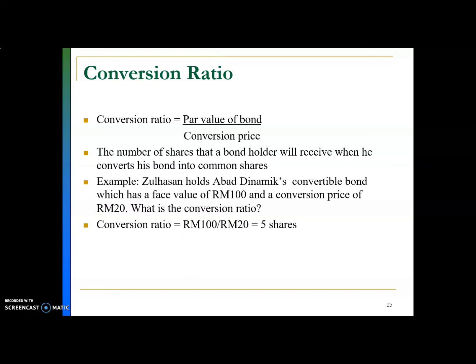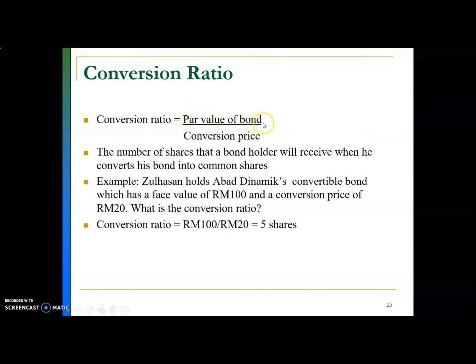How do we value convertible bond? There are some terms you need to know before we learn how to value the bond. First, you need to know what is conversion ratio. Conversion ratio ni adalah number of shares yang you dapat kalau you convert bond tu jadi share. We call it conversion ratio. The formula is par value of bond — ambil par value, bukan bond price — divided by conversion price. The number of shares that the bondholder will receive, we call it as the conversion ratio.